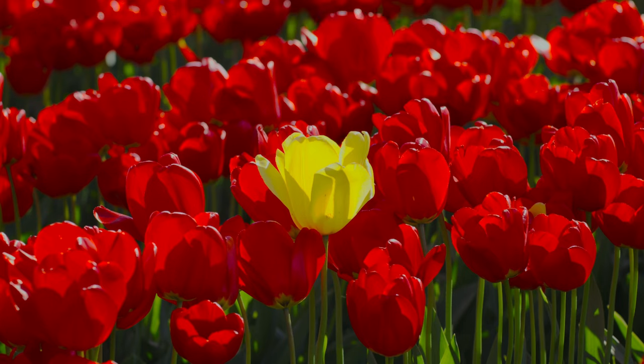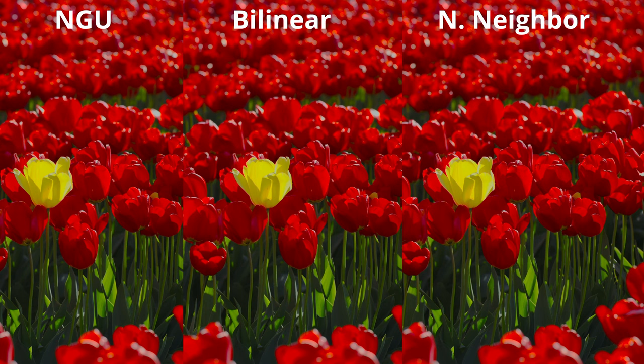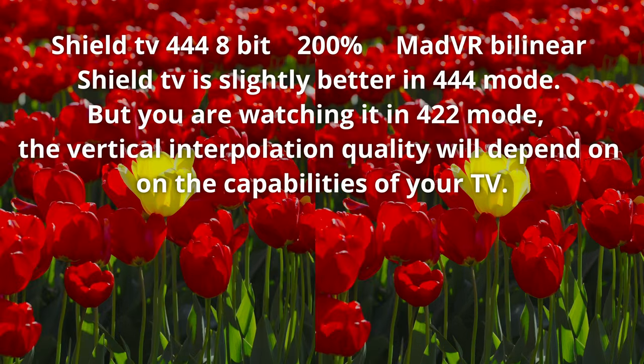Going back to 150%, comparing nearest neighbor, bilinear, cubic, and NGU — the difference is visually almost impossible to see even staring at the screen. The only one that slightly degrades the image is the nearest neighbor method, but you have to look hard and you don't watch TV that way. Shield TV does color interpolation a little better than bilinear mode, but at 100% scale you can no longer see the difference even at arm's length from the screen.